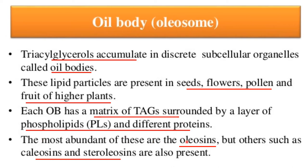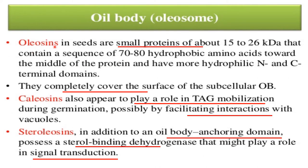Most of these proteins are oleosin, but others such as caleosin and steroleosin are also present. Oleosin in seeds are small proteins of about 15 to 26 kiloDalton that contain a sequence of 70 to 80 hydrophobic amino acids towards the middle of the protein and have more hydrophilic N and C terminal domains. They completely cover the surface of subcellular oil bodies.